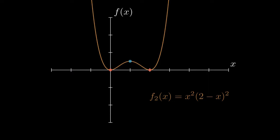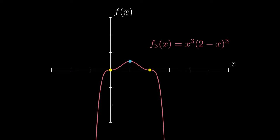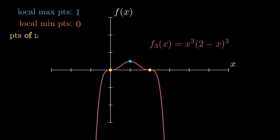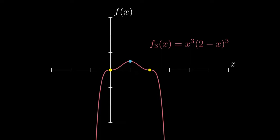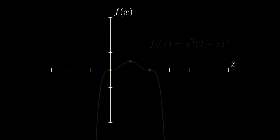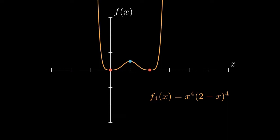On to n equals three. Put that in the calculator. The function has flipped — it's concave down now. We have one local maximum, no local minimums; instead we have two points of inflection. If we're noticing patterns, we'd expect that when n is four the function flips back up to be concave up. Indeed it does — very similar to n equals two: one local maximum, two local minimums, and no points of inflection.